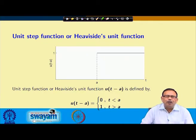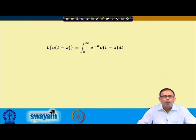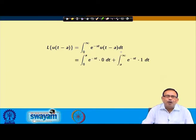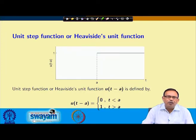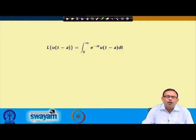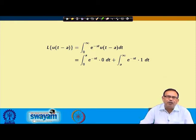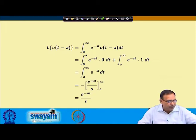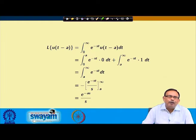Now, the unit step function or Heaviside function: u(t−a) = 0 for t < a and 1 for t ≥ a. Its Laplace transform is ∫₀^∞ e^(−st) u(t−a) dt. Breaking this at a: from 0 to a the function is 0, from a to ∞ it is 1. Evaluating gives L{u(t−a)} = e^(−as)/s.